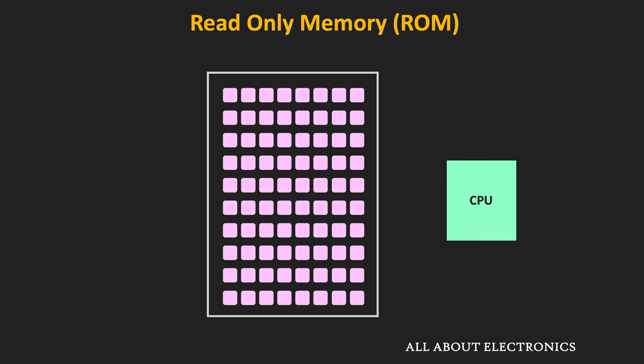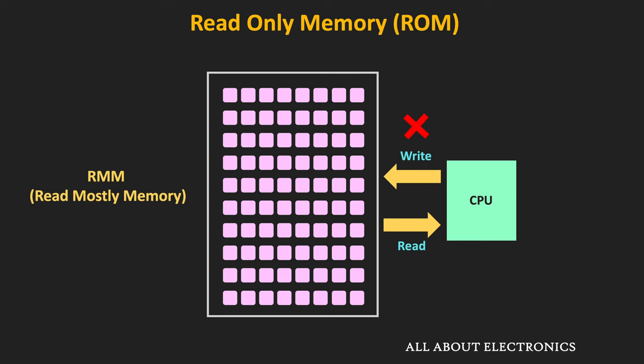ROM stands for read-only memory. As its name suggests, the CPU can only read the data from the memory, but it cannot write it. But nowadays, most of the ROMs available commercially are the read-mostly memory, meaning that mostly they can be used for reading data, but when required, it is also possible to write content into this memory. Later on, we will see the different types of ROMs.